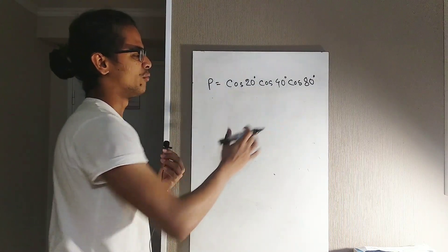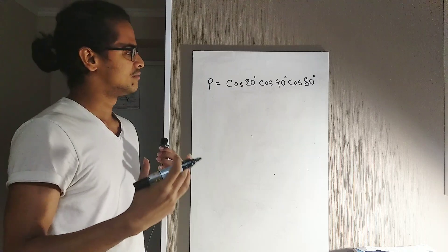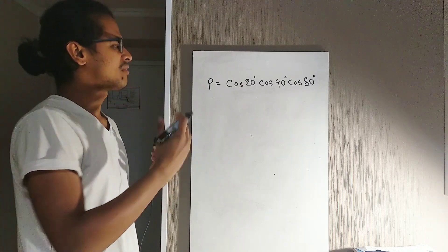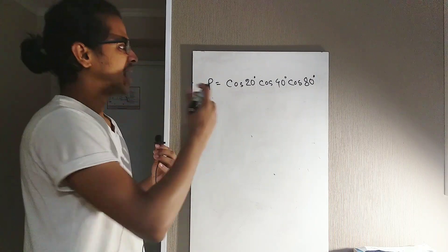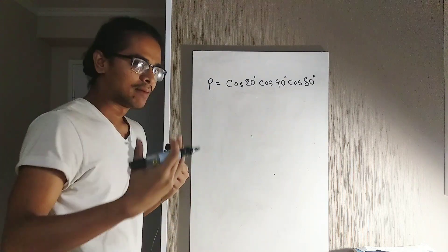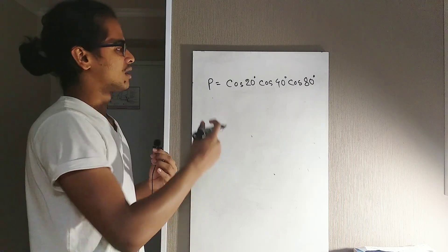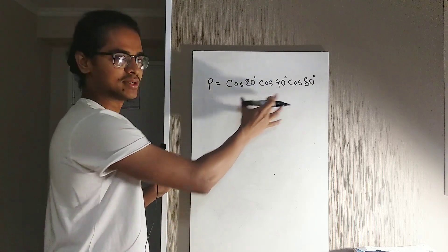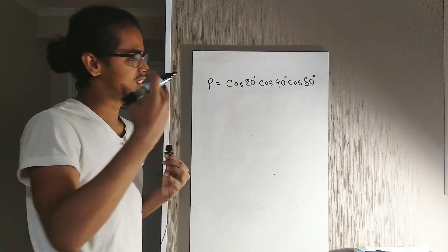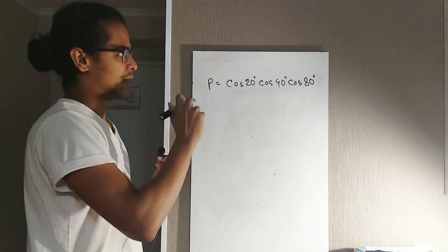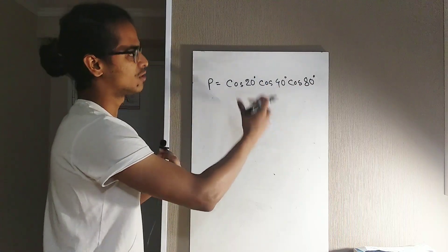When you see this kind of expression where there is a multiplication of several different terms, one effective problem-solving technique is that you can try to multiply both sides by something and then try to transform the expression into something that you already know about. So the idea is to multiply this expression by something and transform it into something familiar.